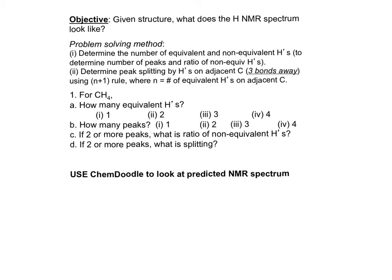Let's practice. Given the structure, predict what the proton NMR spectrum looks like. Stop the video, read this problem-solving method, and predict what the proton NMR for methane looks like. All the protons in methane are equivalent, so we see one peak in the proton NMR spectrum for methane.